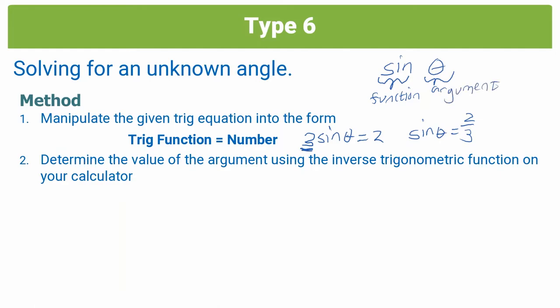So you use the inverse function on your calculator to find the value of the argument by setting it equal to whatever's on the right-hand side. Step 3, solve the equation by equating the arguments to the answer obtained in step 2. So let's go ahead and do an example just to see what this looks like.